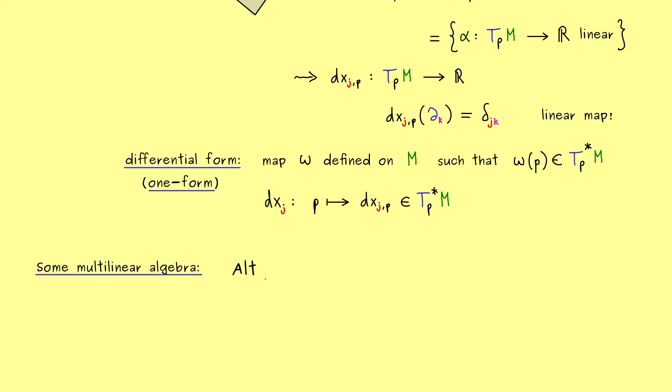We want to extend from linear maps to multilinear maps. We can look at a special subset called Alt^k. This is defined for every vector space V, and we will choose T_p M for V. What is the definition of this set? It's a set of maps alpha. The domain is given by the Cartesian product of the vector spaces V, and we have k of them. The codomain is still the same; we map into the real number line.